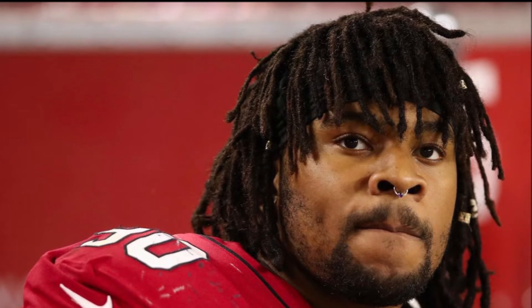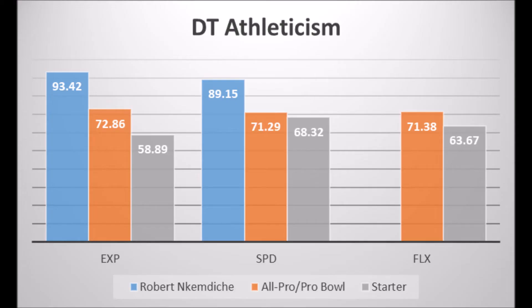Getting into the positives first — this is probably the biggest thing everybody hung their hat on: Robert Candice being a great athlete, which he was. He had a 93.42 explosion score and a great speed score of 89.15. When you look at all-pro and pro bowl level athletes, he's definitely in that range from an explosion and speed perspective.